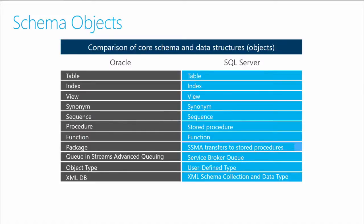Queues and streams are represented by the Service Broker queues in SQL Server. Object types map to user-defined types, which have improved over releases of SQL Server and can now include types with multiple columns, such as a table type. Oracle also has XML capabilities, and there's JSON in Oracle as well. SQL Server similarly has XML and JSON objects that allow you to extend to other platforms.